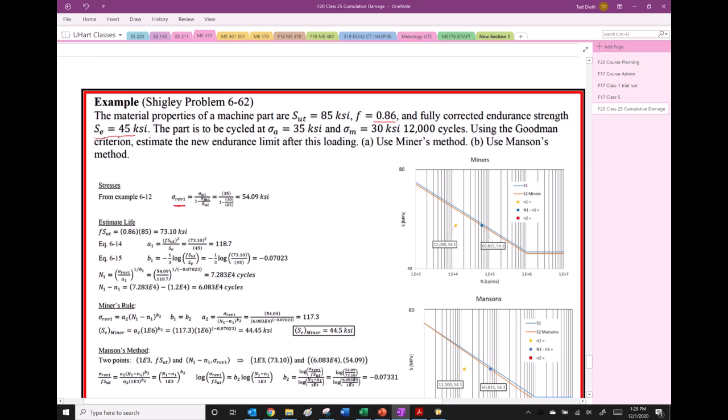So what we do to estimate the life of the thing, the first estimate that we want to try to get is how long will the thing last, right? So we need N1. So at this stress, what is the life of the thing? So we use this equation right here, so obviously we need to find those parameters. So we start with that F, S, U, T, and the endurance strength, and we find A, and then we find B in a similar manner, using these equations that we should be used to at this point.